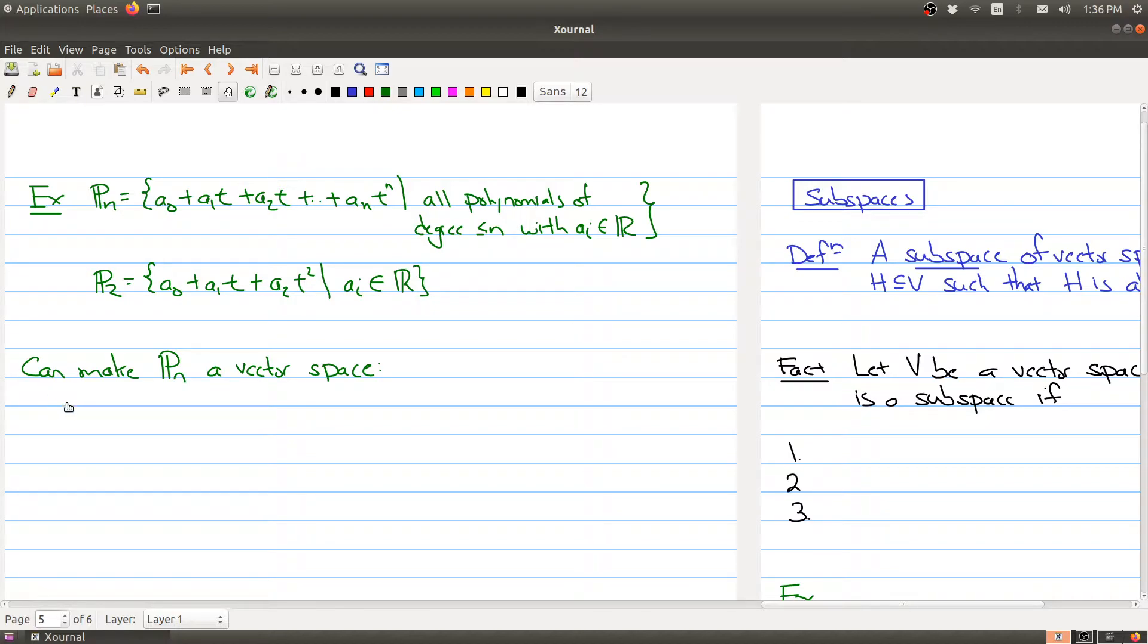So first of all you have to understand what are the vectors. Well what are the vectors in this case? The vectors are polynomials. So that's what our objects are. So now you know what our elements are. Now you have to be able to add them and do your scalar multiplication. So how should addition work?